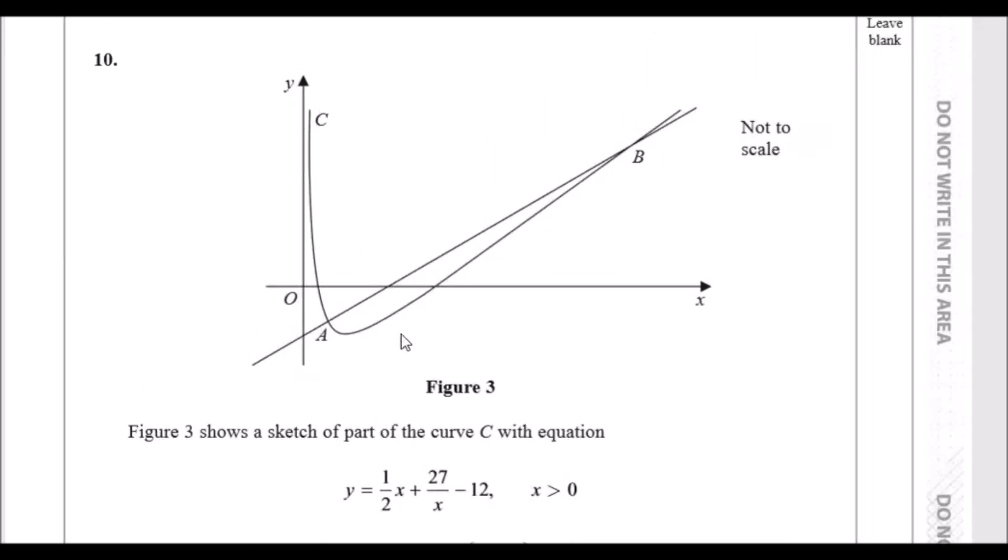So what do we have here? We've got a curve which intersects at two different points. I'll tell you right now there's going to be simultaneous equations, because the only way to get A and B is to use simultaneous equations on the line and the curve.